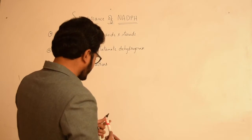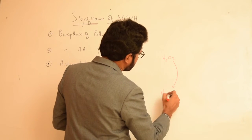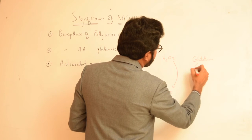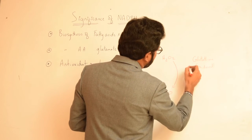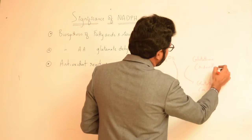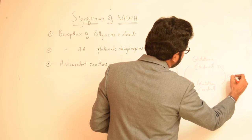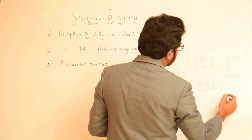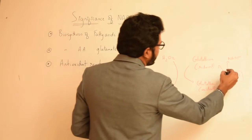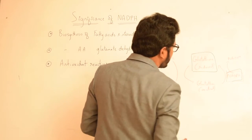Looking at the reaction: hydrogen peroxide gets converted to water in the presence of glutathione in its reduced state. In the process, glutathione gets oxidized, and this oxidized glutathione is again reduced with the help of NADPH. So NADPH maintains glutathione in reduced state — that is the essential role of NADPH in antioxidant reactions.